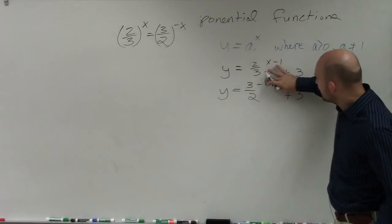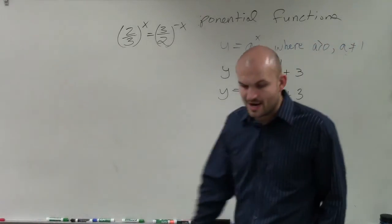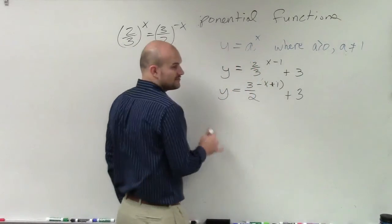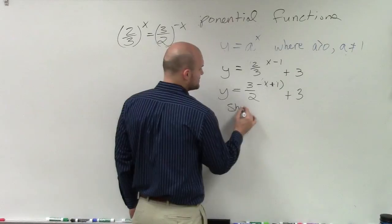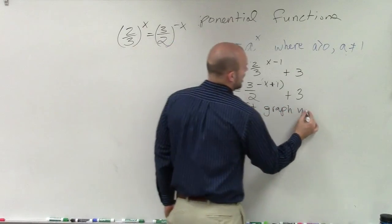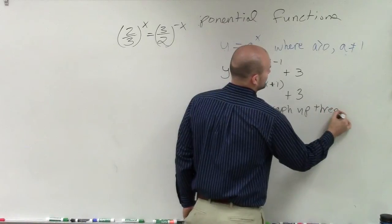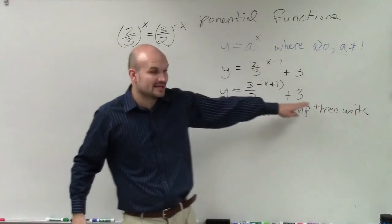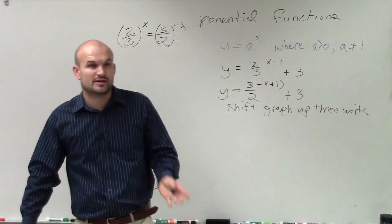So when we do a problem like this, what we need to do is we need to write out and say, all right, well, what are all my transformations? We know we have a positive 3. That means we're going to shift the graph up 3 units, right? Whenever we're adding outside the parentheses, we shift the graph up 3 units.